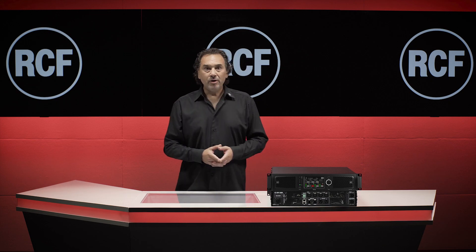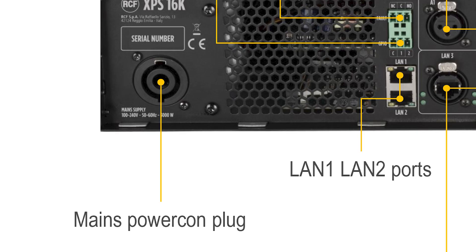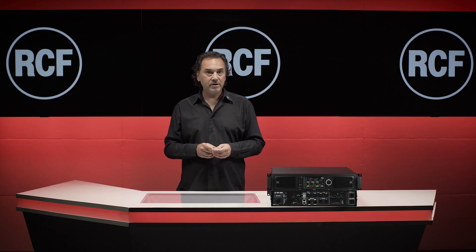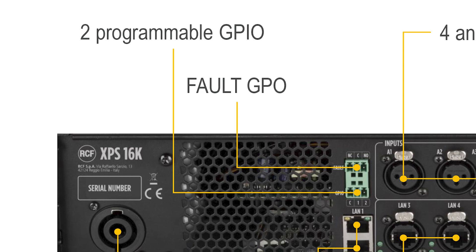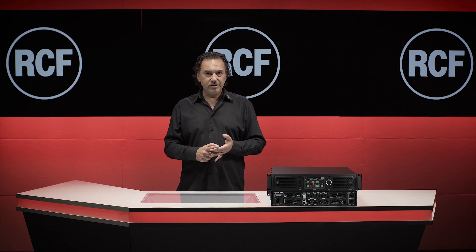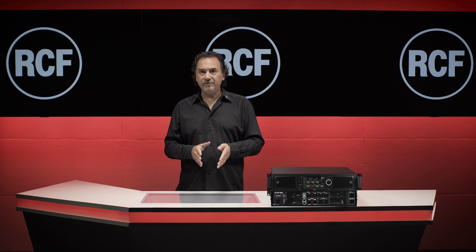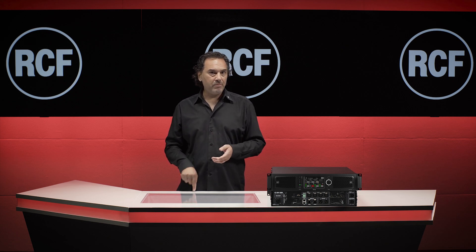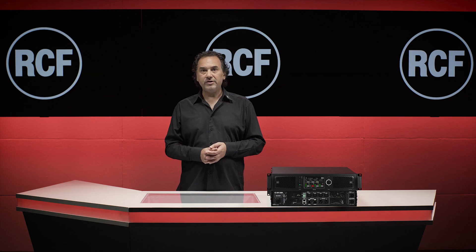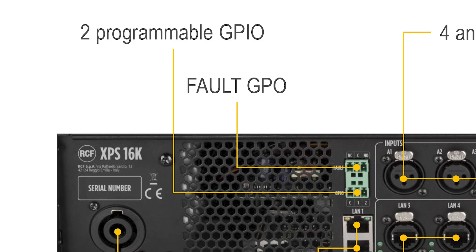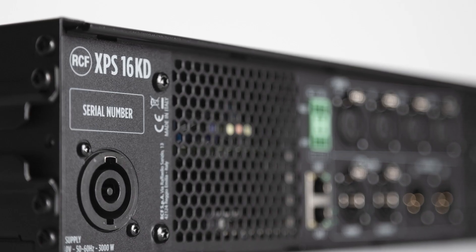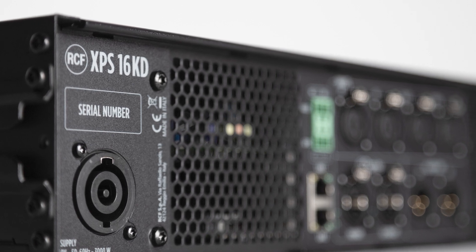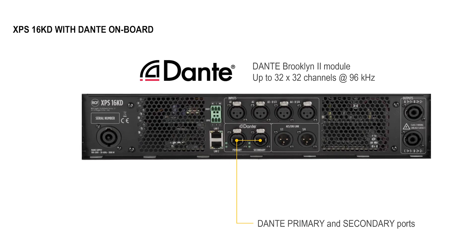Let's take a closer look at the I/O section of the XPS 16K amplifier. In the rear panel, on the left we see the main powerCON plug supplying a switching power supply unit working from 100 to 230 volts without hardware changes. Then we have two multi-purpose GPIO to trigger, for example, Global Mute, routing signal to priority inputs, recall a specific preset using a physical button, and other very useful functions. The XPS 16K has an embedded switch offering 4 Gigabit network ports, AVB compliant, and in the XPS 16K V version, two of them are used for Dante primary and secondary network.